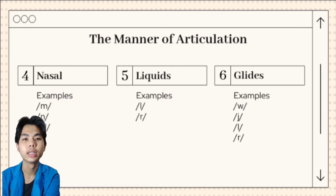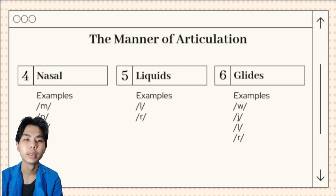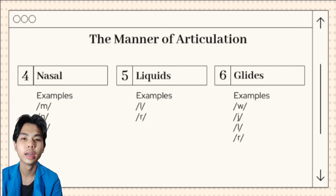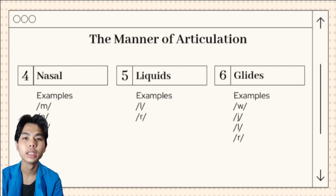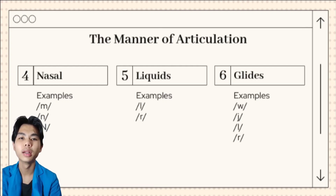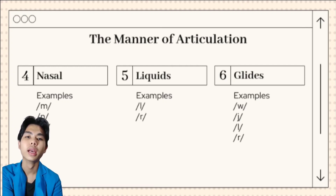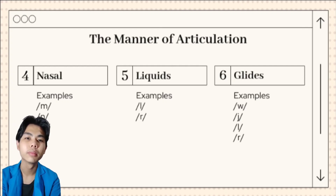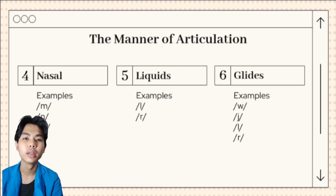And next, liquids. The initial sounds in 'red' and 'led' are described as liquids. They are both voiced. The L sound is called a lateral liquid and is formed by letting the air stream flow around the sides of the tongue as the tip of the tongue makes contact with the middle of the alveolar ridge. The R sound at the beginning of 'red' is formed with the tongue tip raised and curved back near the alveolar ridge.